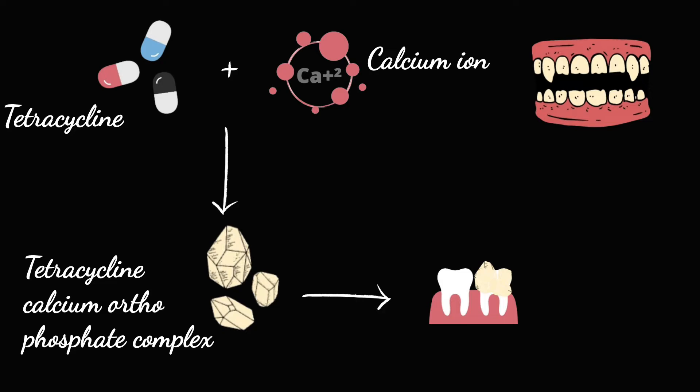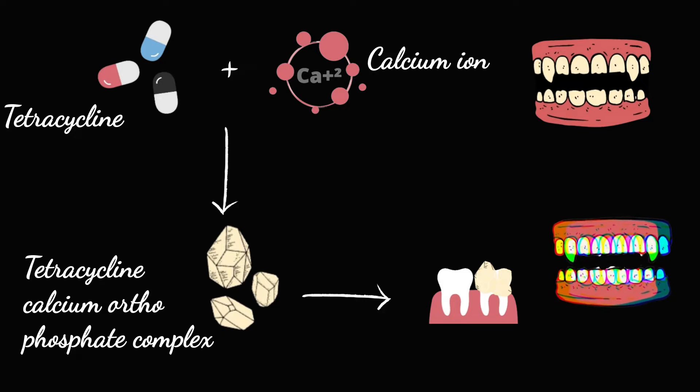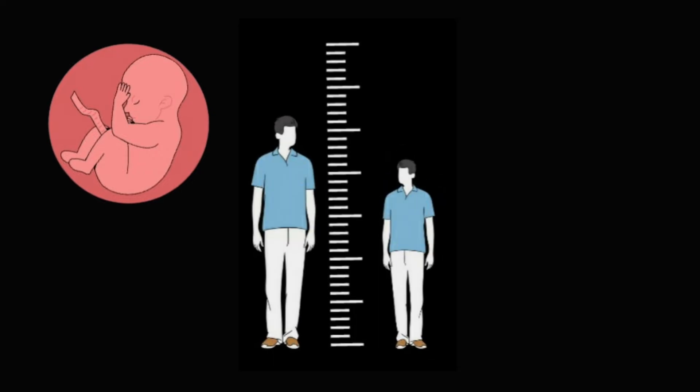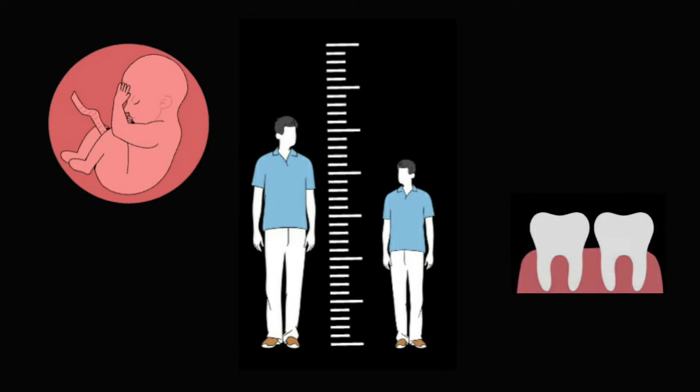This discoloration of the teeth is fluorescent in UV light. Hence, tetracycline when given during late pregnancy or childhood causes temporary suppression of bone growth. Also, tetracycline when given between three months to six years of age affects the enamel of the teeth.